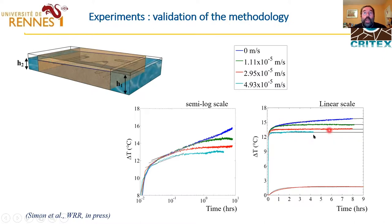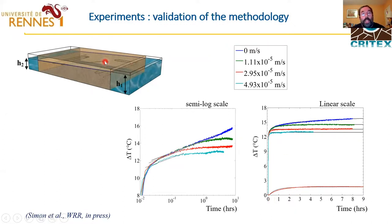This is the agreement we obtain for the different values of flux. In color, this is the data, and in black lines these are the model. The model perfectly reproduces the data with great accuracy. What is also interesting is that here, this is a temperature measured something like 10 cm ahead of the heating source, and we can also reproduce very well the behavior of the temperature at 10 cm. So it seems to work very well.